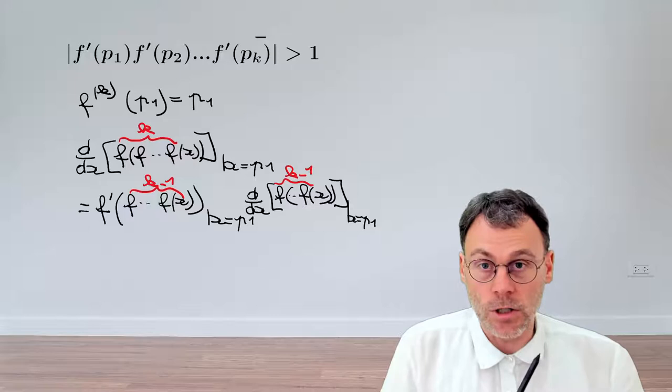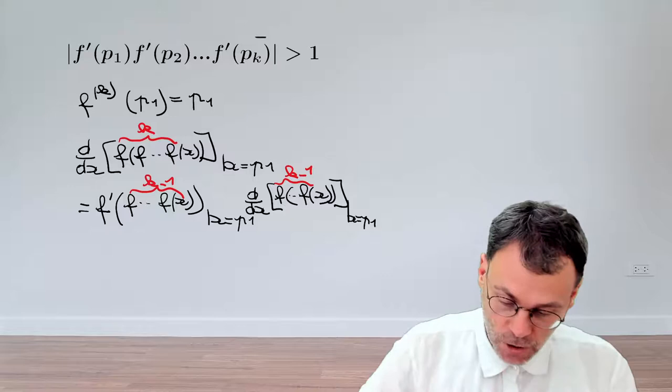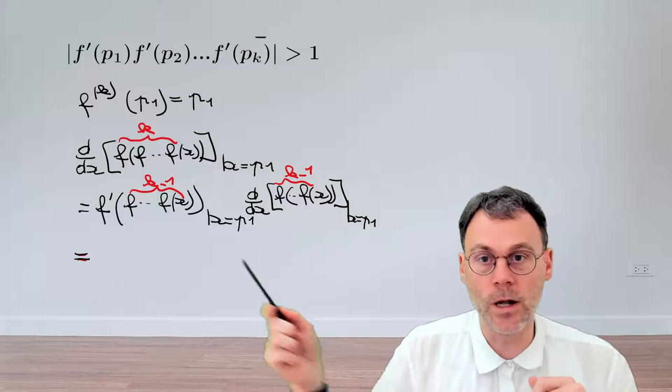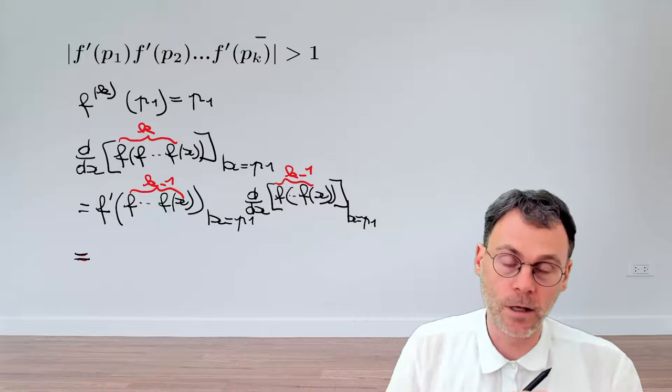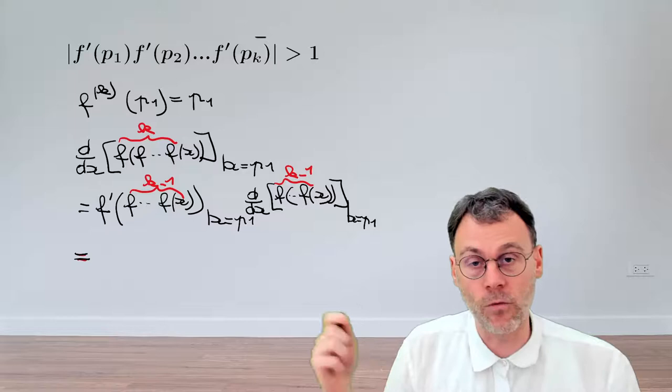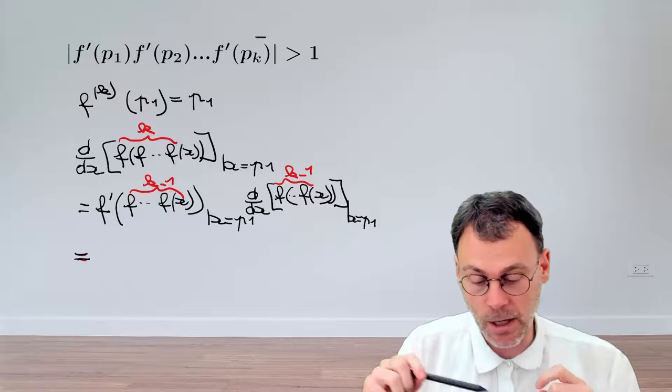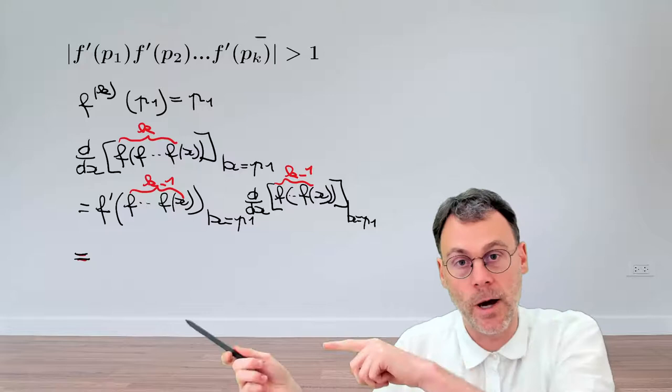Good. Let's clean this thing up a little bit. More specifically, the first factor here. So if we substitute p1 inside here, the first thing we need to do is calculate f of p1. So this is going to be p2 because it's a periodic orbit. So applying f once takes us from p1 to p2. Obviously, applying f k minus 1 times will take us from p1 to k minus 1 plus 1, which is pk.